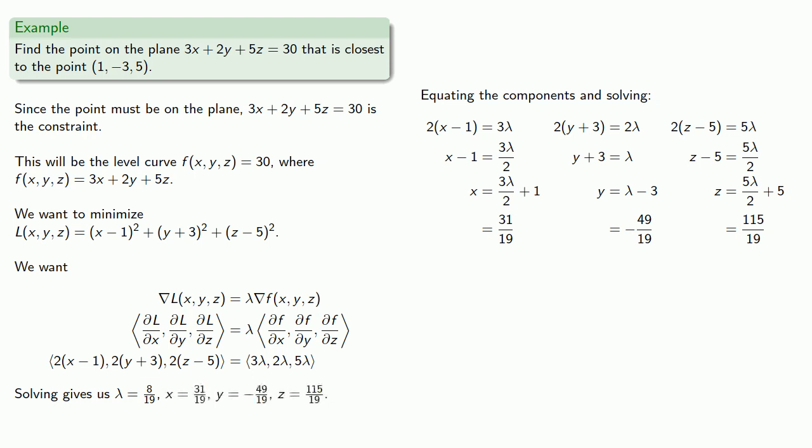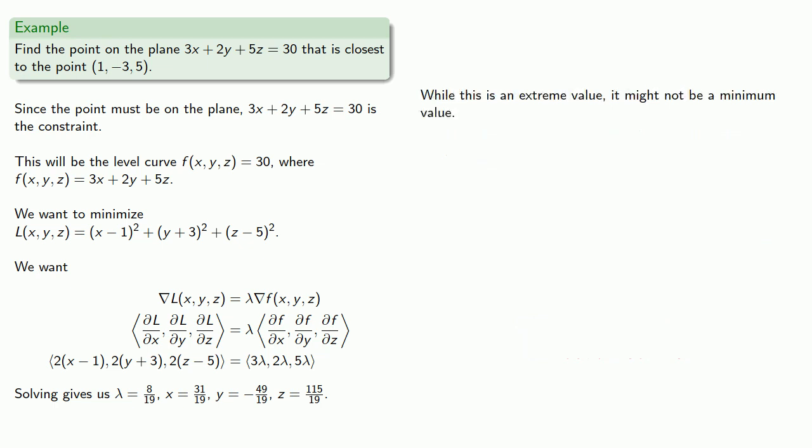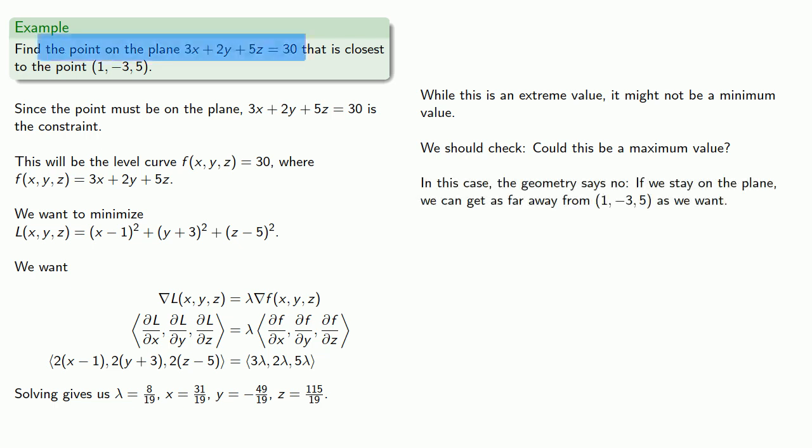And since we're looking for a point, well, here's the x, y, and z coordinates of a point that makes the objective function have an extreme value. And again, while this is an extreme value, it might not be the minimum value that we're looking for, and so we should check, could this be a maximum value? And in this case, the geometry says no. If we stay on the plane, we can get as far away from the point as we want. And that means the point that we found is in fact the point on the plane closest to the given point.